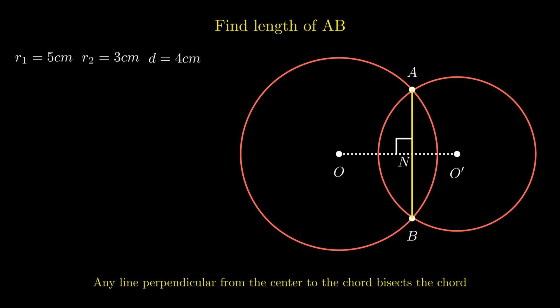So we conclude segment AN is equal to segment BN. Therefore segment AB is twice of segment AN. By using this equation we will focus on segment AN to calculate the length of segment AB.